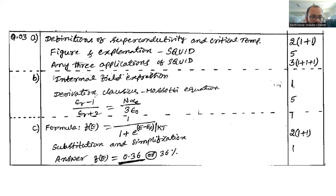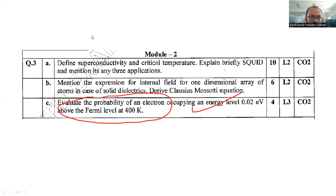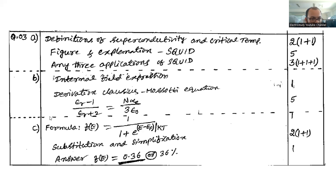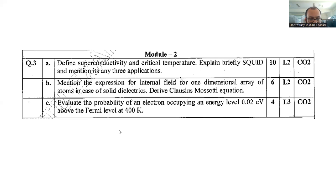Then evaluate the probability of electron occupying an energy level of 0.02 electron volt above the Fermi level at 400 Kelvin. How to answer this? Follow this formula. This is the final expression, f(E) you will be getting 36 percent probability in terms of percentage or decimal, no issues.